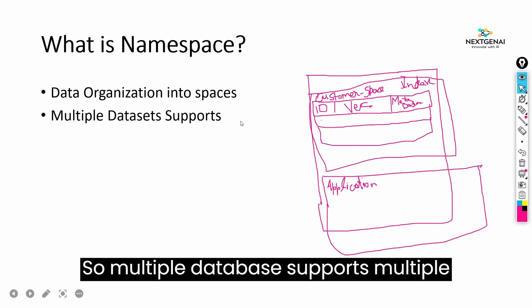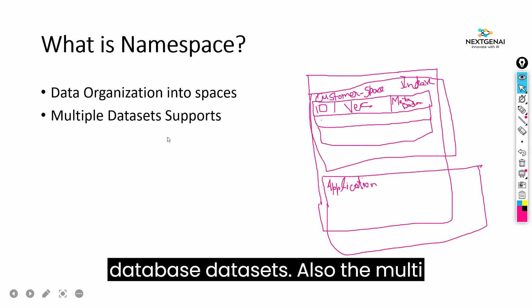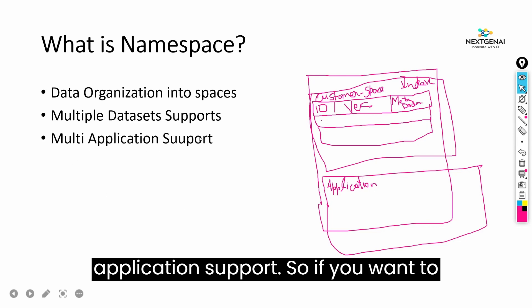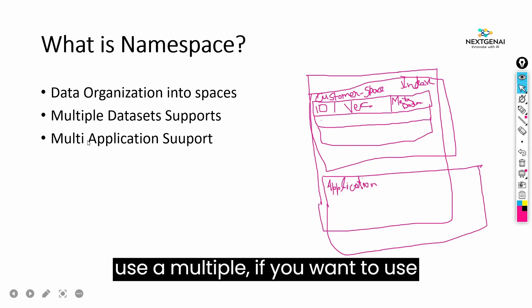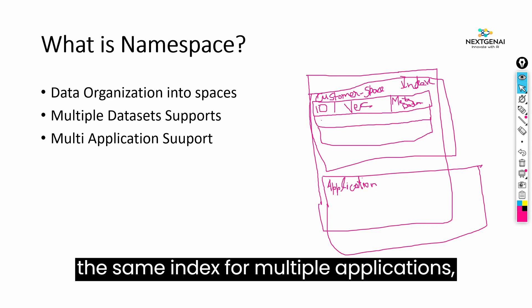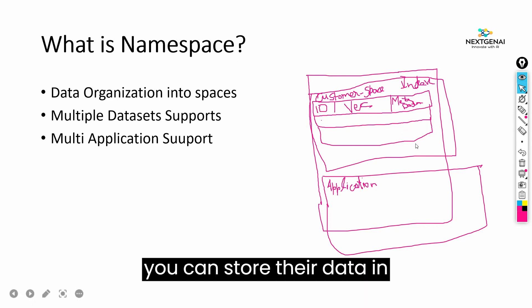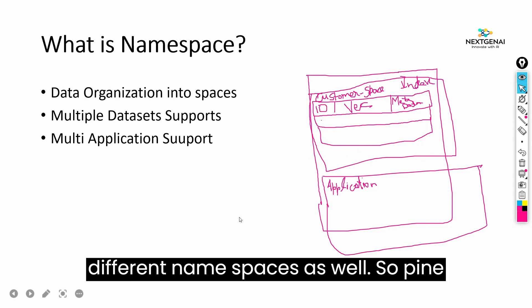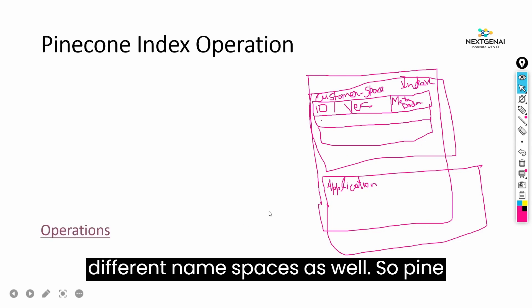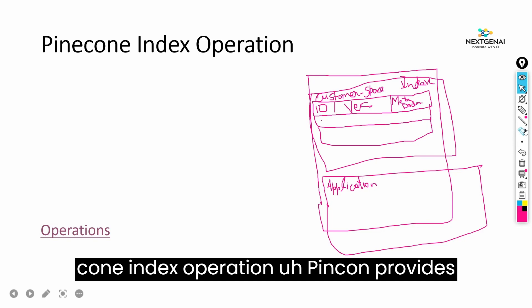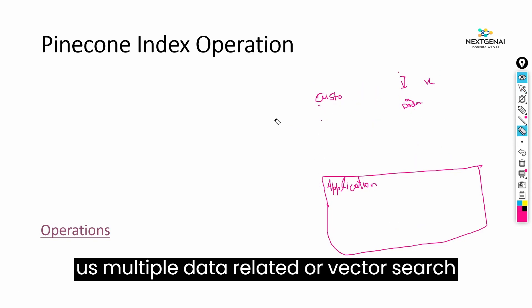Namespaces support multiple datasets within one index and also enable multi-application support. If you want to use the same index for multiple applications, you can store their data in different namespaces as well. Pinecone provides multiple vector search-related operations that you can use.